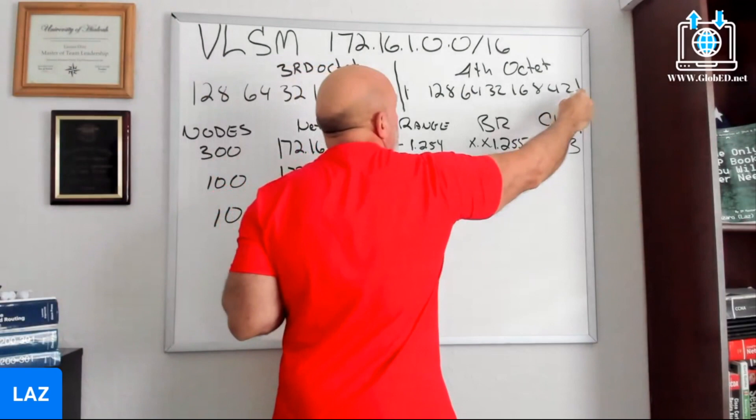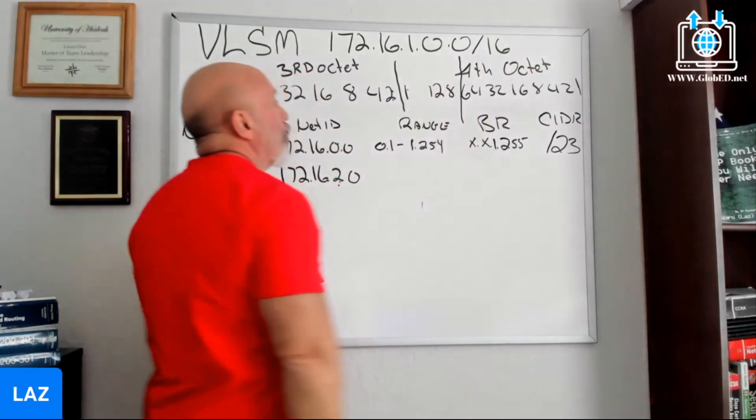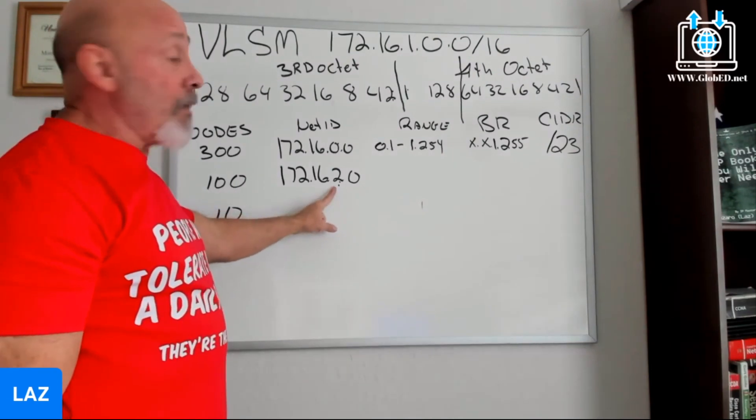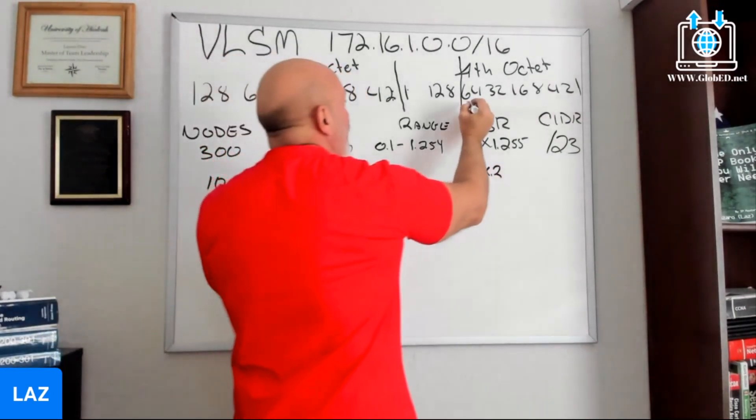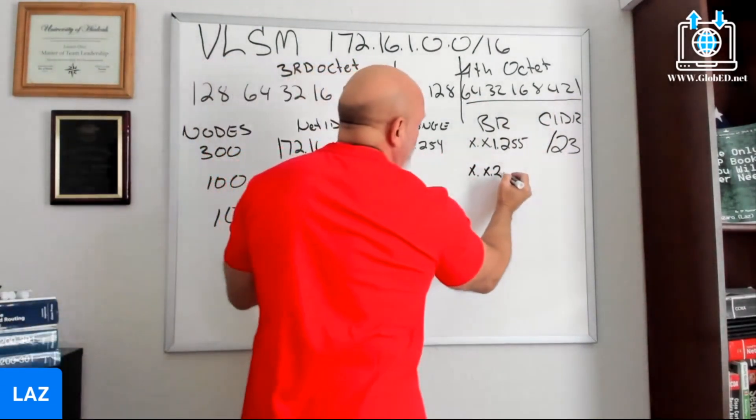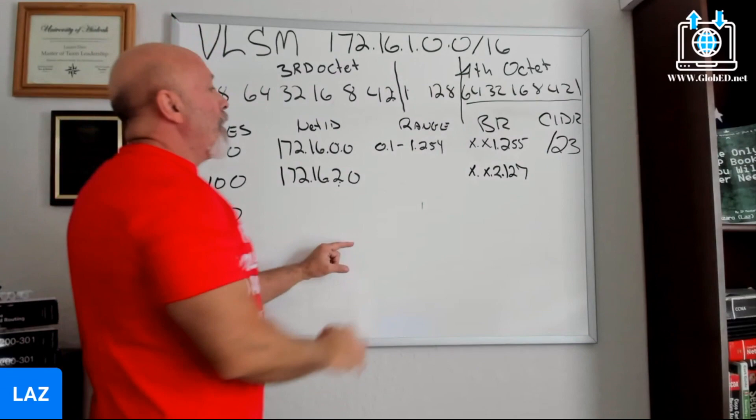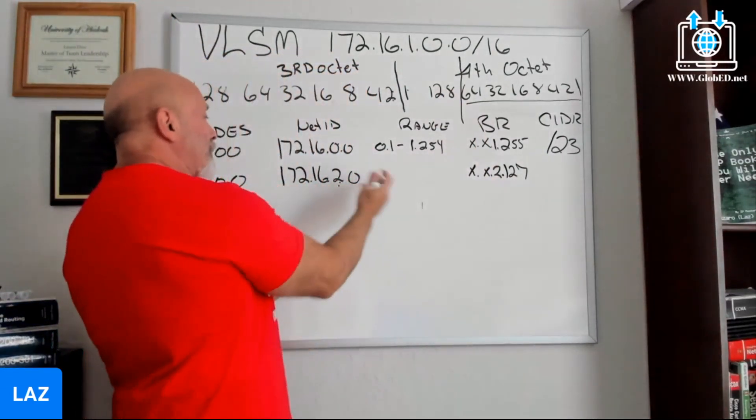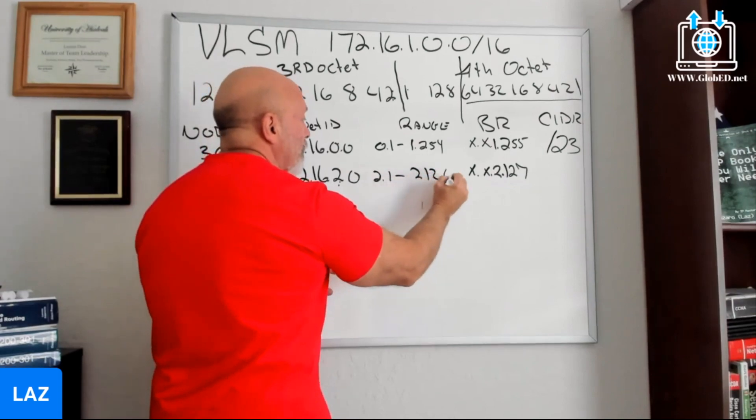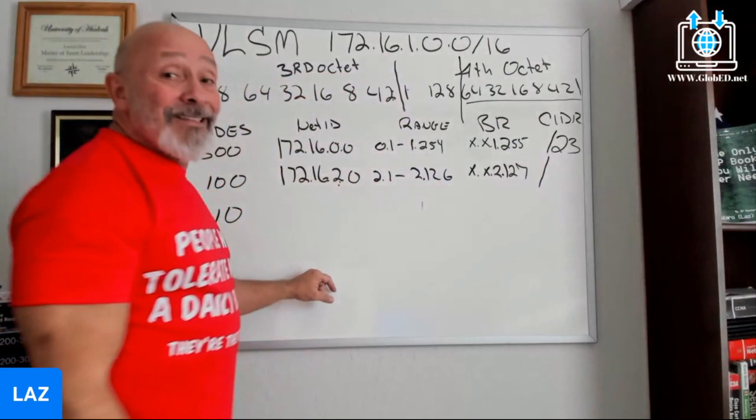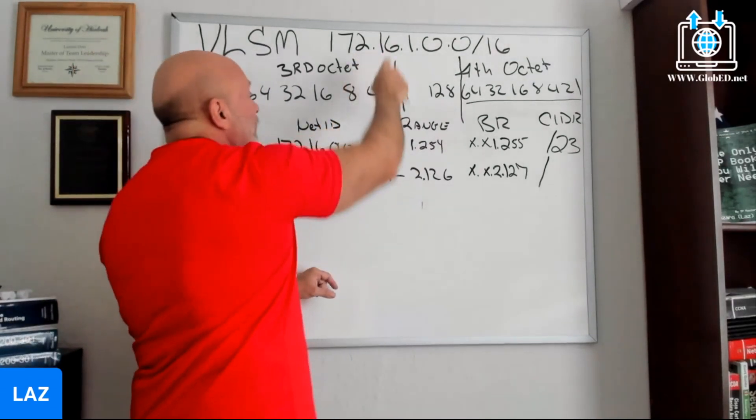Now we need 100. 2, 4, 8, 16, 32, 64, 128 - right there. We can't change this anymore, we're working on the fourth octet. For the broadcast, X.X.2.127 - if you add all these bit values up. What's the range? What's after 2.0? 2.1. What's before 2.127? 2.126. What is the CIDR? You turn on two more bits - it's 25. If you count it: 8 and 8 and 8 is 24, and one more is 25 because you added two more bits.